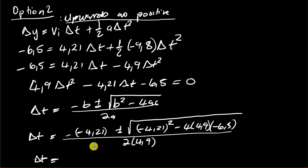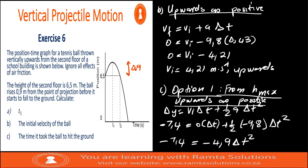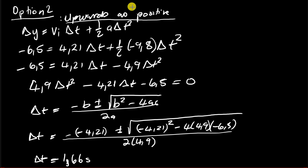Solving gives Δt = 1.66 seconds — the same answer as option one. Both methods confirm it takes 1.66 seconds for the ball to hit the ground. That's it guys, I'll see you next time. Bye!